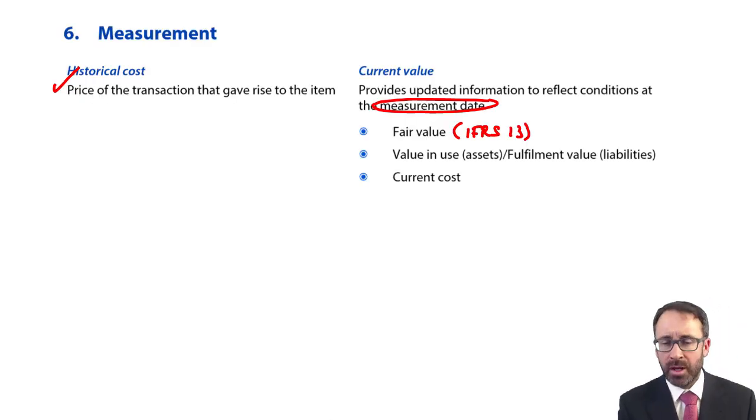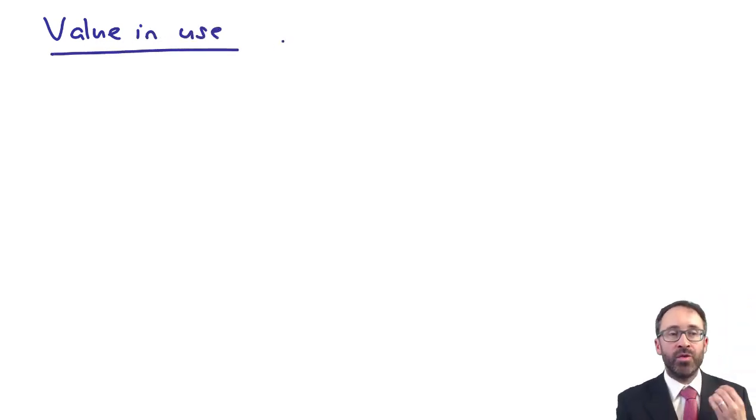What we've then got as well is to look at your value in use. So your fair value is an exit value. Your current cost is an entry value. Your value in use is also an exit value. Exit because you're using the asset and therefore consuming the benefit. So you're exiting effectively from its use. The same value in use for an asset is called fulfillment value with regards to a liability.